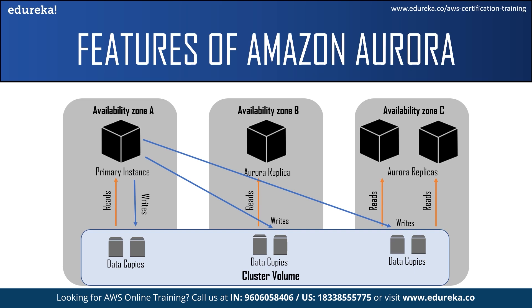There are two types of DB instances that make up an Aurora DB cluster. First, we have the primary DB instance, which supports read and write operations and performs all the data modifications. Second, we have the Aurora replica, which connects to the same storage volume as the primary DB instance and supports only read operations. Each Aurora DB cluster can have up to 15 Aurora replicas in addition to the primary DB instance.